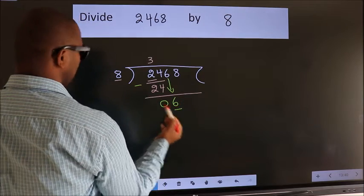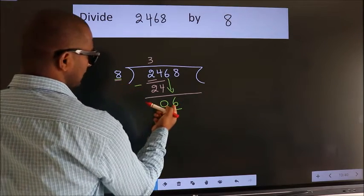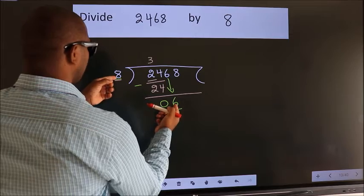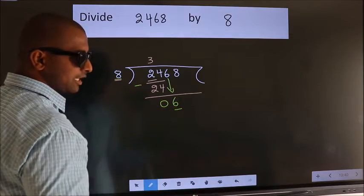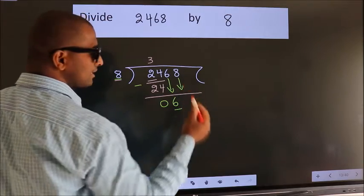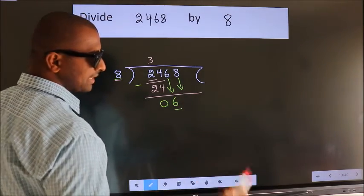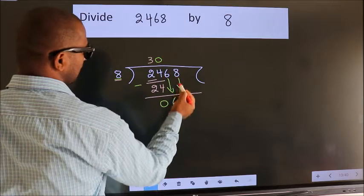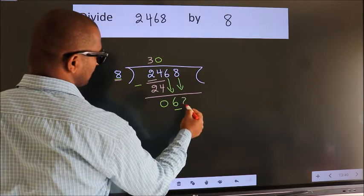Here we have 6. Here 8. 6 is smaller than 8. So, we should bring down the second number. And the rule to bring down second number is put 0 here.